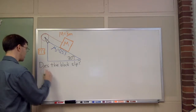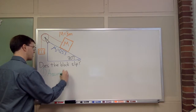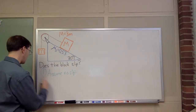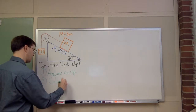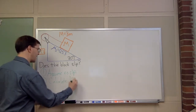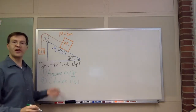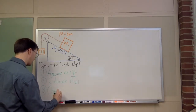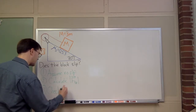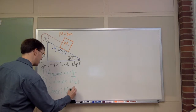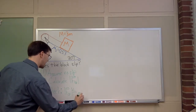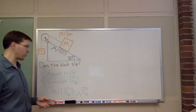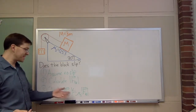Step one: we're going to assume, tentatively, that there's no slip — that it doesn't slip at all. Step two: we're going to calculate the necessary static friction force to prevent it from slipping. And then step three: we're going to check the empirical equation for static friction, which says that the magnitude of the force of static friction has to be less than or equal to mu_s, the static friction coefficient, times the magnitude of the associated normal force. That's our plan — these three steps will tell us whether or not it slips.